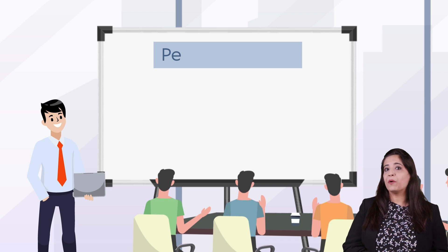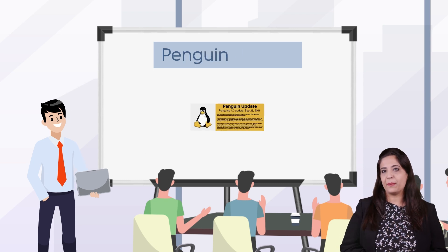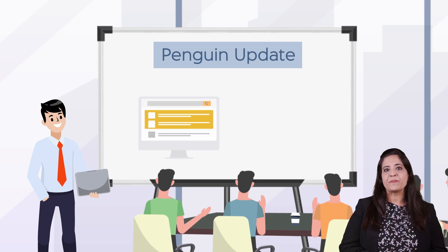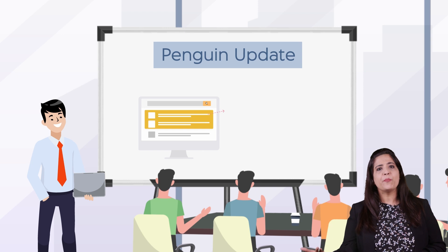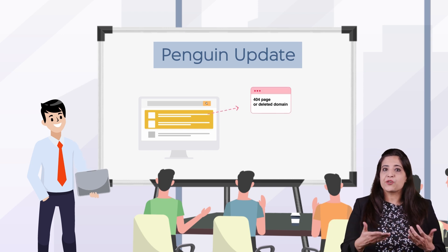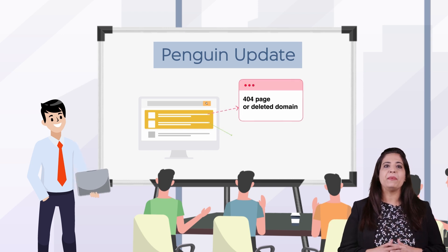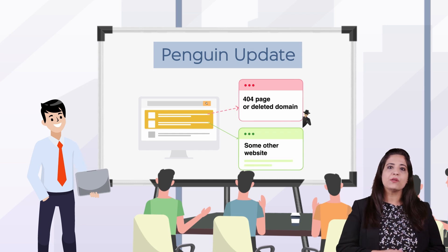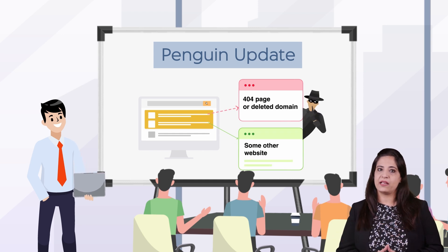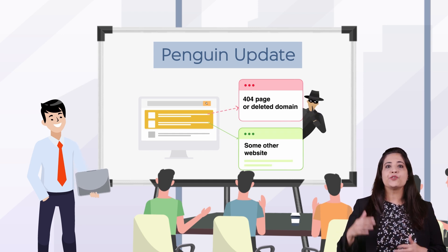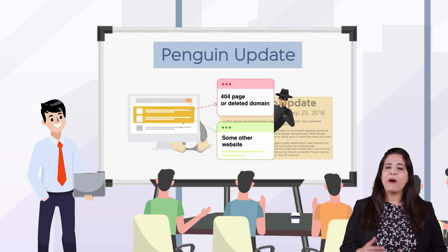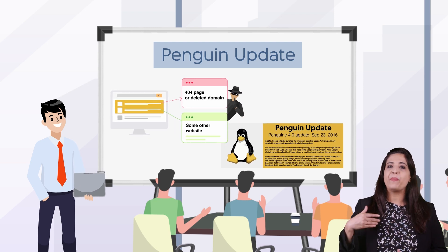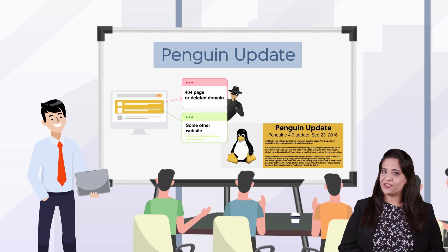Next, we talk about the Penguin update. In the timeline of 2010–12, apart from poor content, another trend was to perform spammy link building activities, also called Black Hat Tactics. To crack down on that, on March 26, 2012, the Penguin algorithm was first introduced.